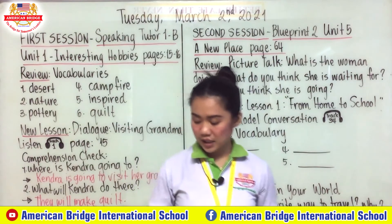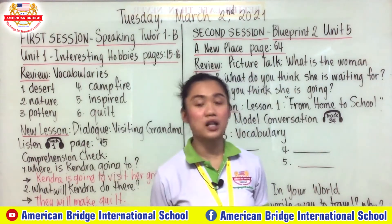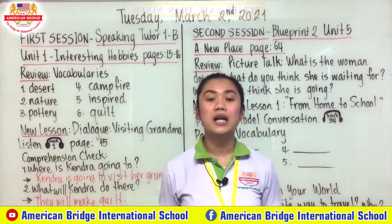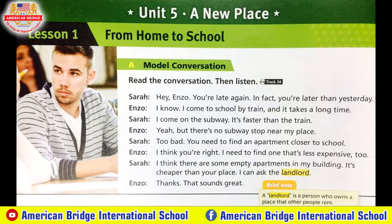Open your book to page 64. For Part A, model conversation, you are going to read and listen to the conversation. This is listening Track 34. Hey Enzo, you're late again. In fact, you're later than yesterday. I know, I come to school by train and it takes a long time. I come on the subway — it's faster than the train. Yeah, but there's no subway stop near my place. Too bad, you need to find an apartment closer to school. I think you're right. I need to find one that's less expensive, too. I think there are some empty apartments in my building. It's cheaper than your place. I can ask the landlord. Thanks, that sounds great.